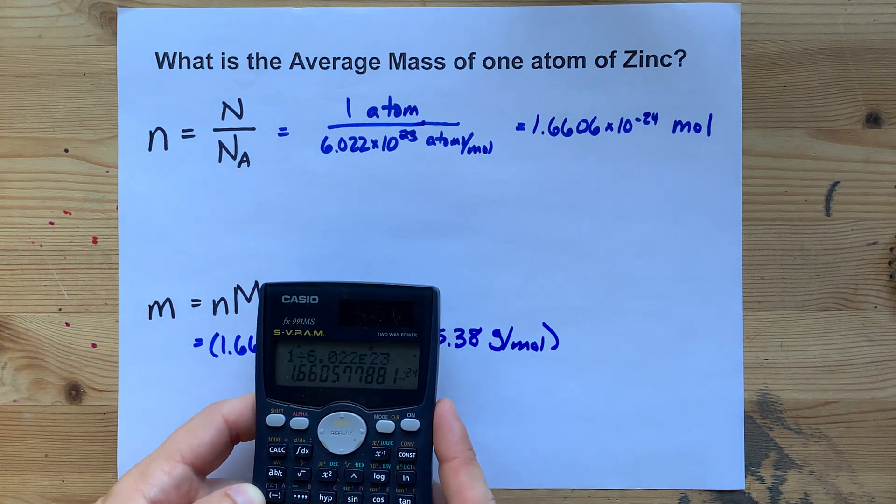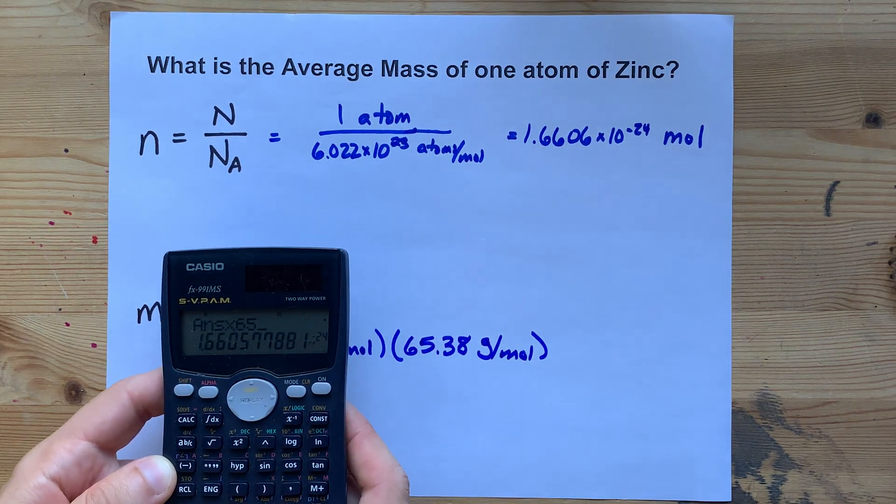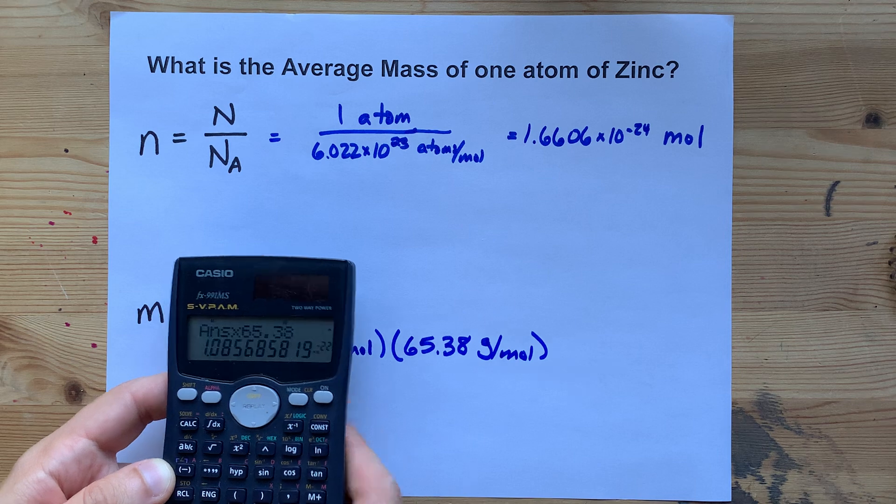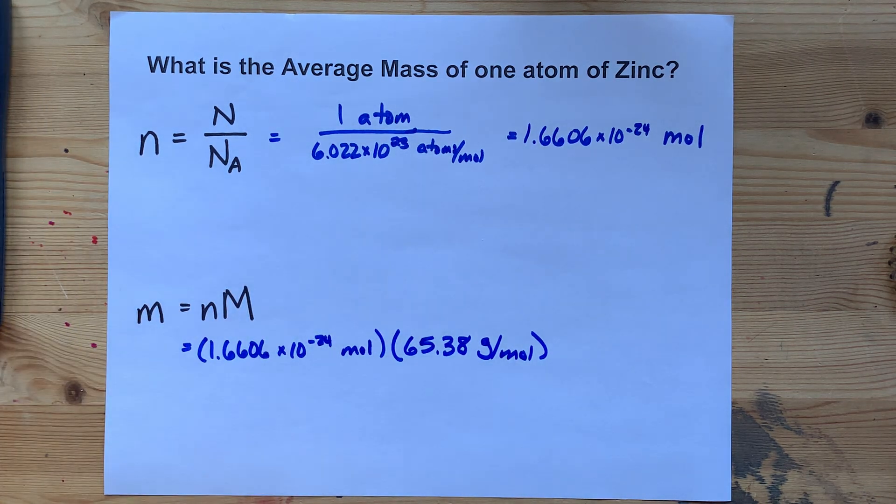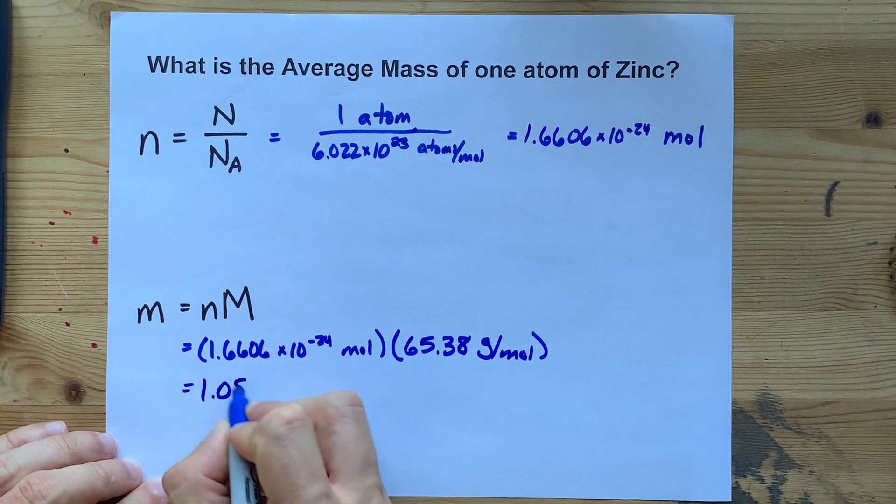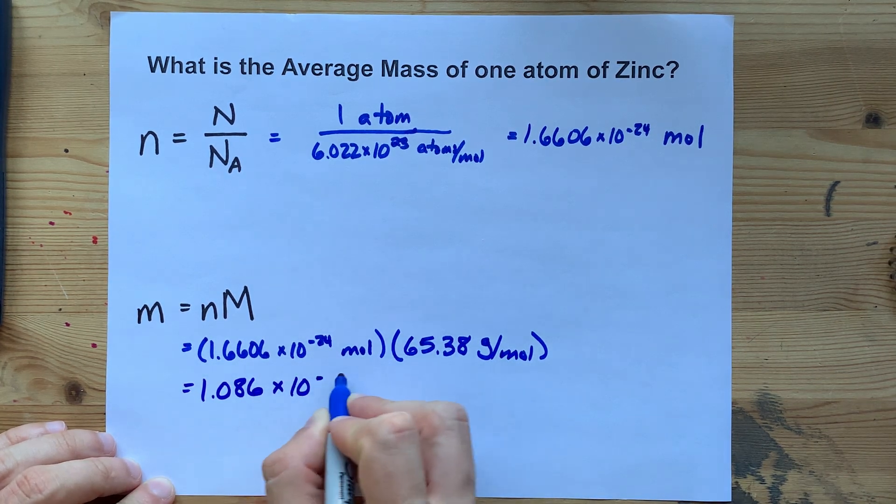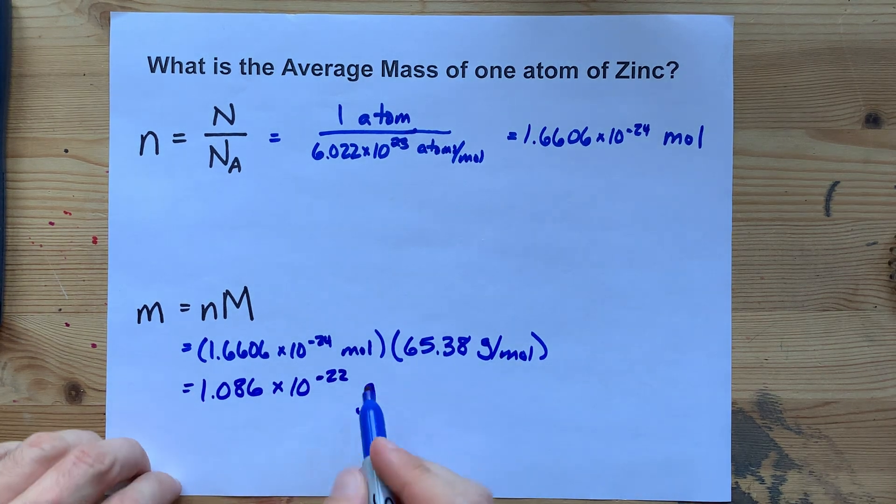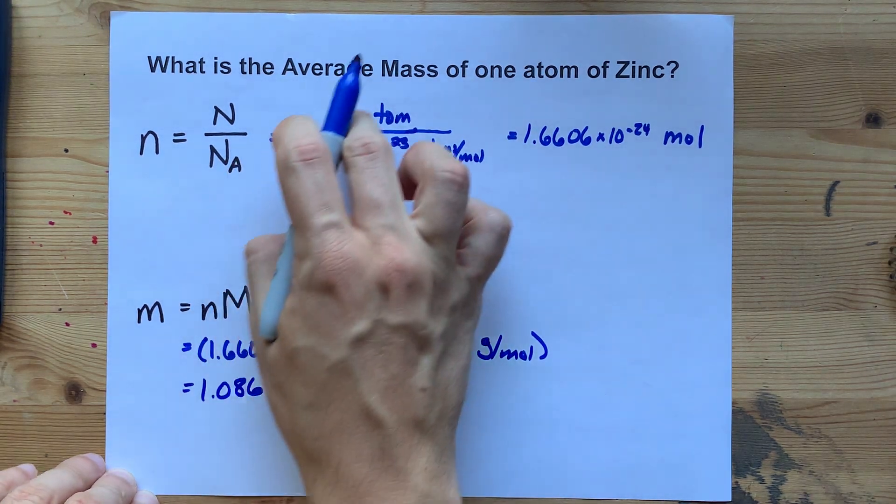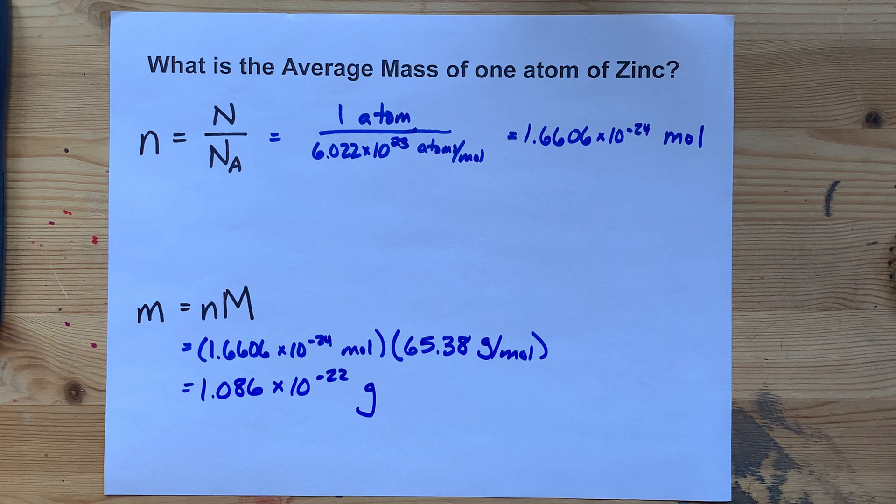1.6606 times 65.38. That is 1.086 times 10 to the negative 22. So 1.086 times 10 to the negative 22 grams is the average mass of one atom of zinc.